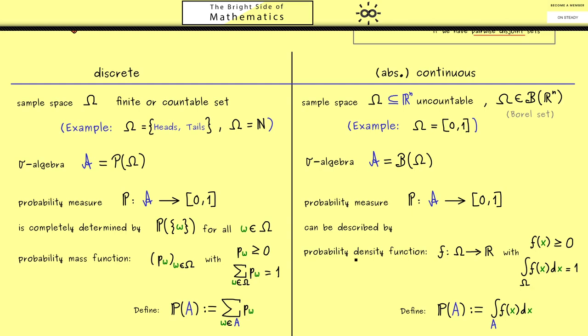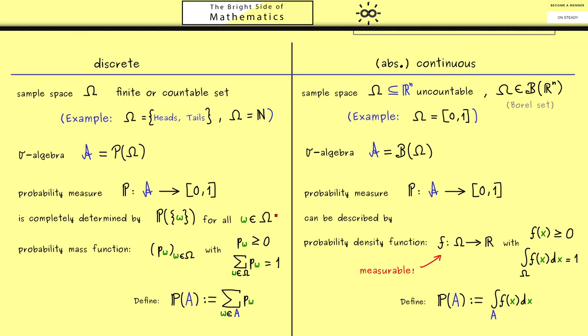This is our translation between both cases. However, to be honest, I omitted one technical detail here on the right-hand side because we have to deal with sigma algebras. For this reason, the density function f needs to be measurable. It's a property we need such that all the integrals make sense. If you don't know this term measurable yet, don't worry, we will talk about it later. At the moment, it's sufficient that you know we need some technical detail here.